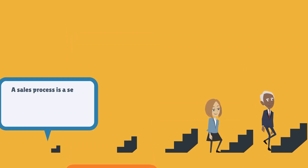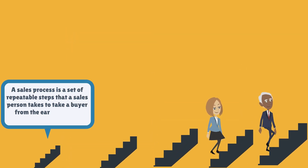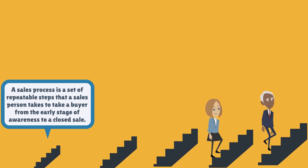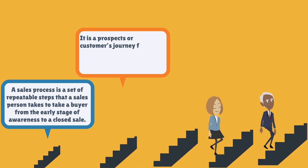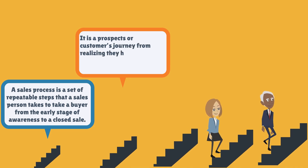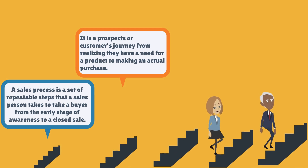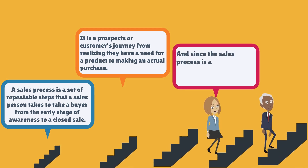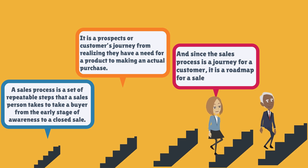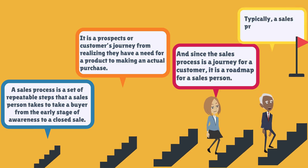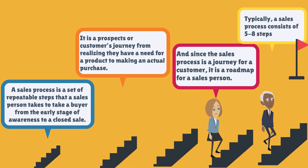A sales process is a set of repeatable steps that a salesperson takes to take a buyer from the early stage of awareness to a closed sale. It is a prospect's or customer's journey from realizing they have a need for a product to making an actual purchase. And since the sales process is a journey for a customer, it is also a roadmap for you, the salesperson. Typically, a sales process consists of five to eight steps.